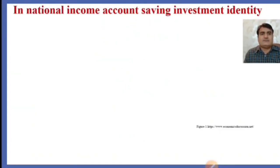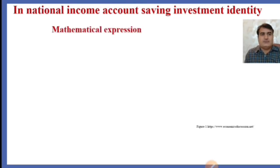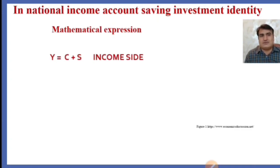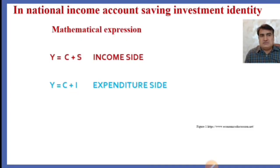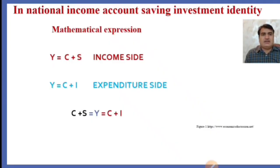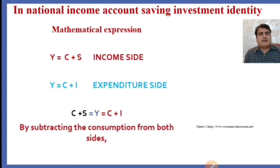In national income accounts, the saving-investment identity is shown mathematically. From the income side: total output Y = C + S. From the expenditure side: total output Y = C + I. So consumption plus saving equals total output, and total output equals C + I. By subtracting consumption from both sides, we get saving equals investment (S = I).